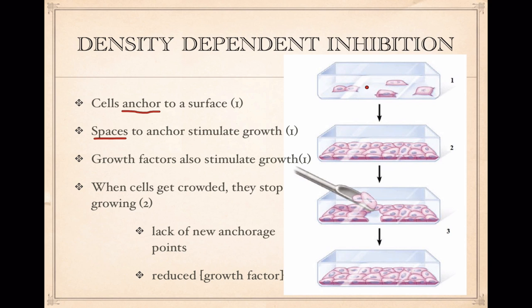These cells are growing until they touch, and when they touch, they stop growing. Scientists believe the reason for this is when the cells get crowded in a single layer, the concentration of growth factors goes down, and there's not enough growth factors to support the continued proliferation of the cells, so they slow down and stop growing. When cells get crowded, they stop growing for two reasons: they lack new anchorage points, and there is reduced concentration of growth factors.